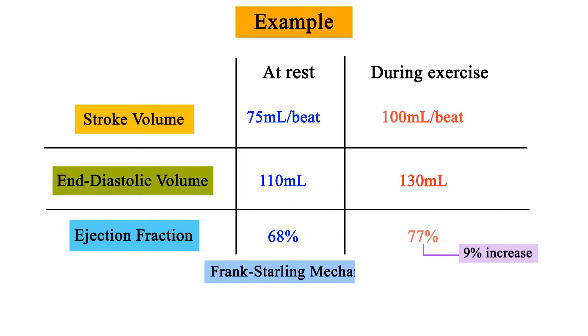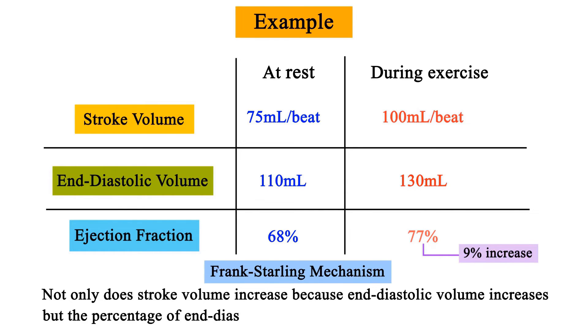Thus, due to the Frank-Starling mechanism, not only does stroke volume increase because end diastolic volume increases, but the percentage of end diastolic volume that is ejected per beat increases.